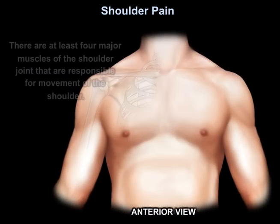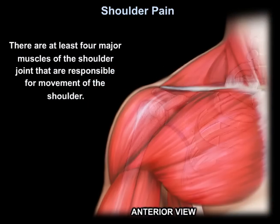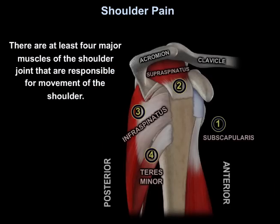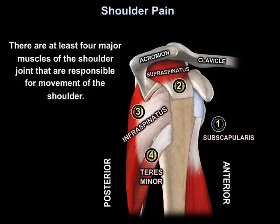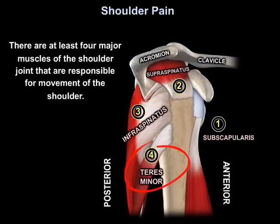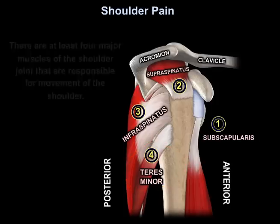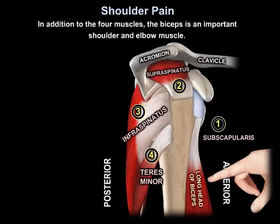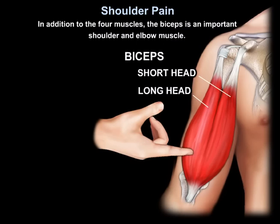There are four major muscles of the shoulder joint that are responsible for movement of the shoulder. These are the subscapularis, the supraspinatus, the infraspinatus, and the teres minor muscles. In addition to the four muscles, the biceps muscle is an important shoulder and elbow muscle.